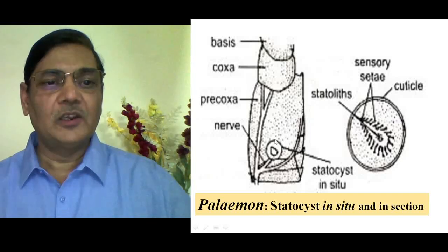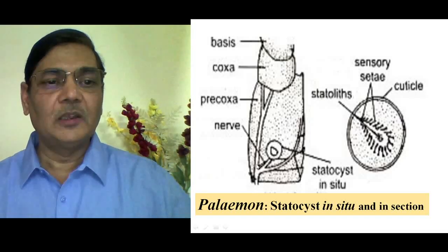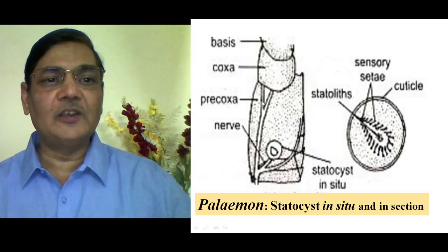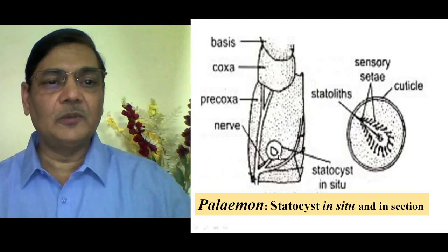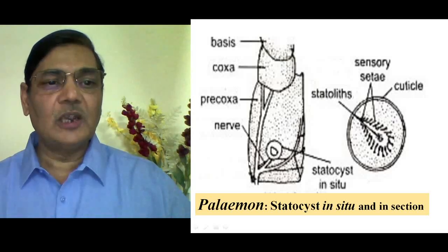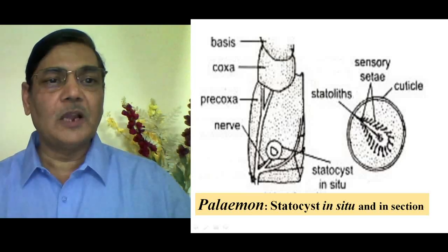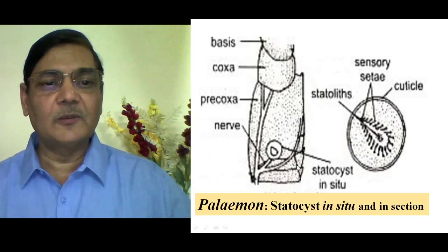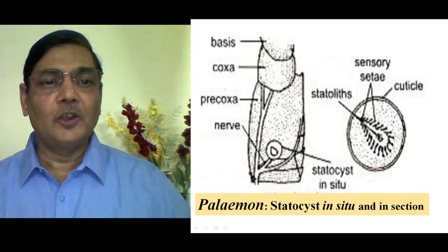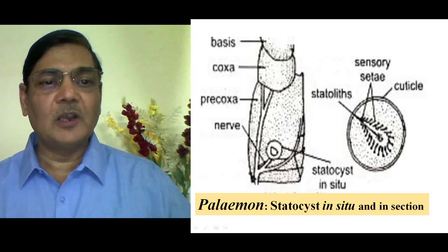This Statocyst is innervated by a nerve. There is an antennulary nerve that innervates different portions of the antennule, and one of its branches comes and joins the Statocyst. You can separate the antennule from the body of Palaemon and then make a cut on either side of the Protopodite — on this side as well as the other side — and then open the two layers of the Protopodite; the external flaps can be opened.